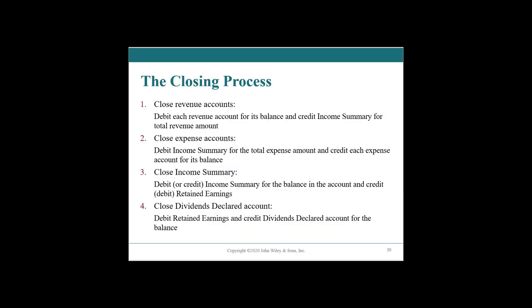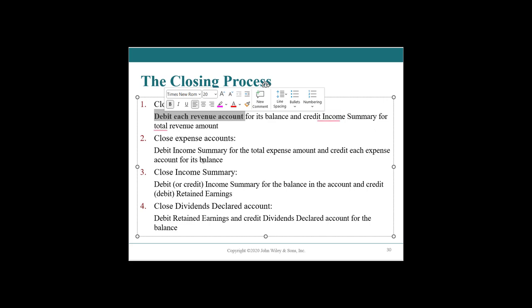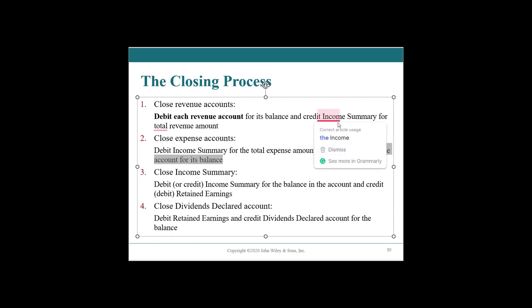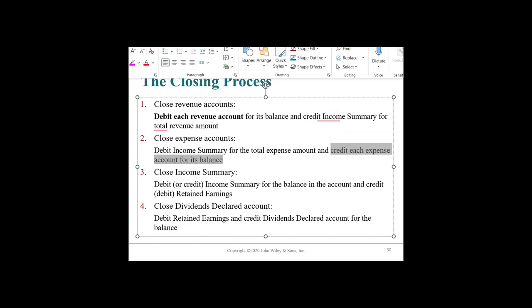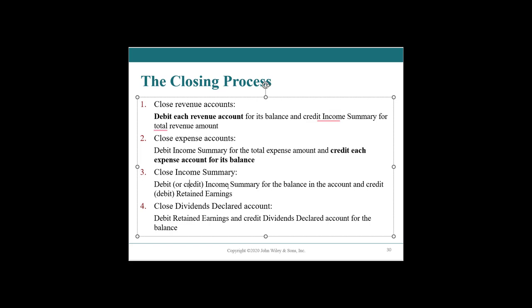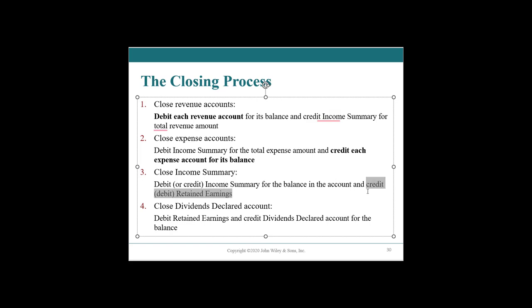To summarize the closing process: first, we close each revenue account by debiting that revenue account for the ending balance. Then we credit the expense accounts. You can use an income summary account as an intermediary, but that income summary account ultimately just goes to retained earnings. We have to zero out our expenses by giving them a credit.